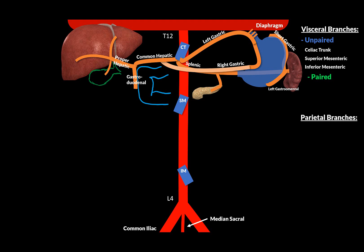The gastro-duodenal artery descends along the duodenum and divides into an artery supplying the stomach and one for the duodenum — hence the name gastro-duodenal artery. It gives off the right gastro-omental artery, which travels towards the greater curvature of the stomach to meet up with the left gastro-omental artery. The other branch is the superior pancreato-duodenal artery, supplying both the pancreas and the duodenum. That's the celiac trunk.